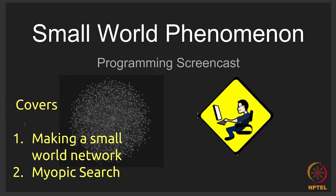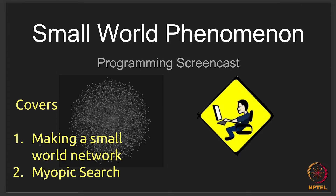First of all, we are going to look at how do we make a small world network. I am sure all of you remember, so I will quickly recap it. Secondly, we will look at how one does a myopic search on this network — how one does a decentralized search on this network. Before starting off with the programming screencast, I will quickly recap both of these concepts.